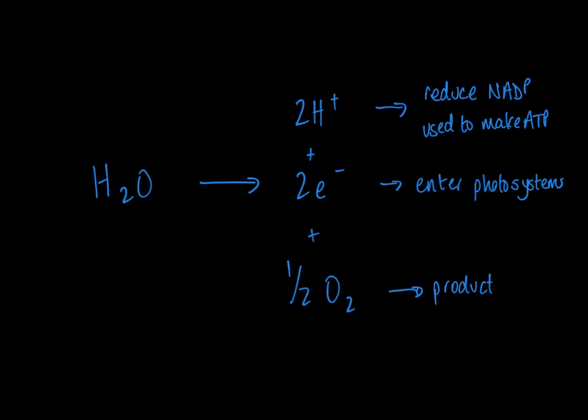And then the electrons enter the photosystems and are then used to drive basically that production of ATP and reduction of the NADP, all of which will become clear when you look at the light-dependent reaction video.